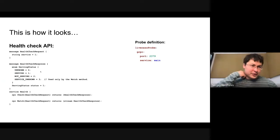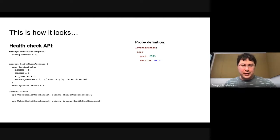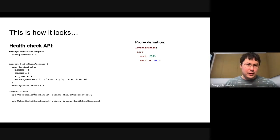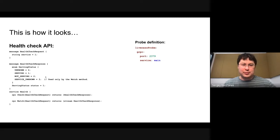gRPC has a health check protocol. The health check request has a service name as a string — it's essentially a label for what you want to health check. You can respond via Check (which immediately returns status) or Watch (which continuously monitors status and responds as soon as the service changes state). 'Serving' status is what you're looking for; other statuses indicate some problem.